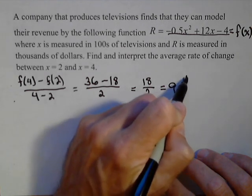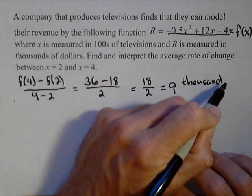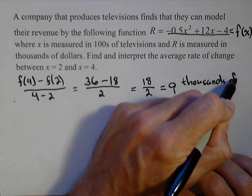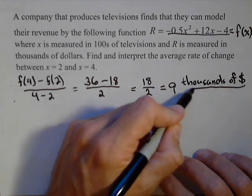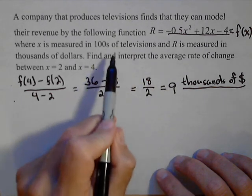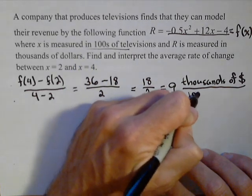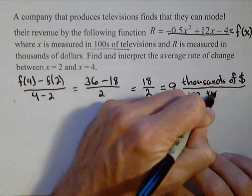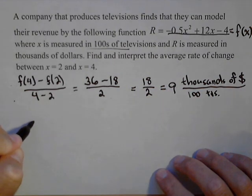So let's just actually write it out first, and we'll fix it. So thousands of dollars per one unit change in input. Remember, one unit was 100 televisions. So per 100 TVs.